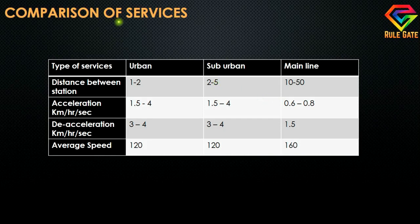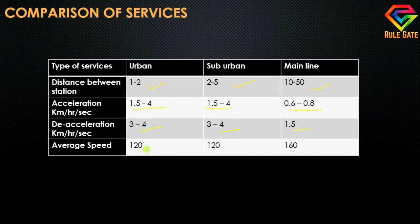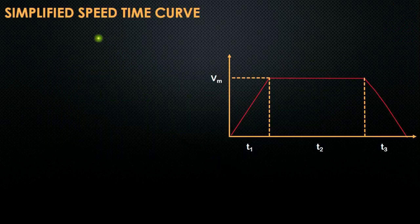Here is a quick comparison between the services. The distance between stations is 1 to 2 km for urban, 2 to 5 km for suburban, and 10 to 50 km for mainline. The acceleration and deceleration periods are almost the same in urban and suburban, but very small in mainline. Average speed is 120 km per hour for both urban and suburban, whereas mainline requires 160 km per hour, as it needs to cover a larger distance. To maintain good frequency of electric locomotives, higher speeds are needed.